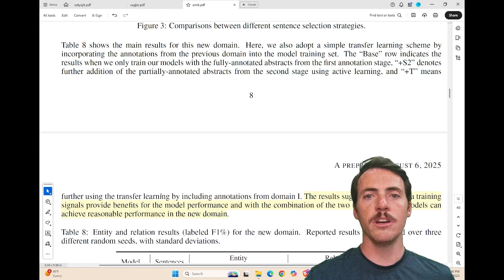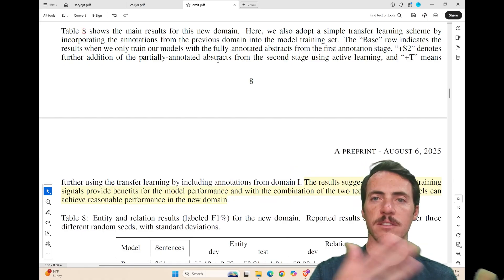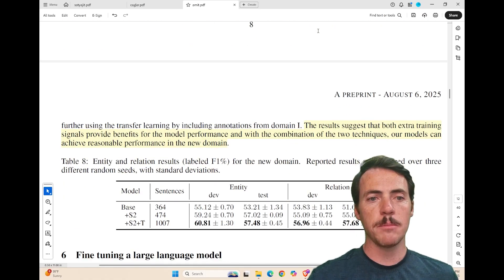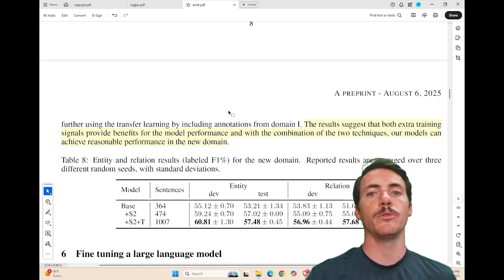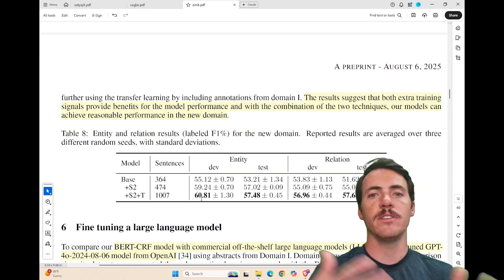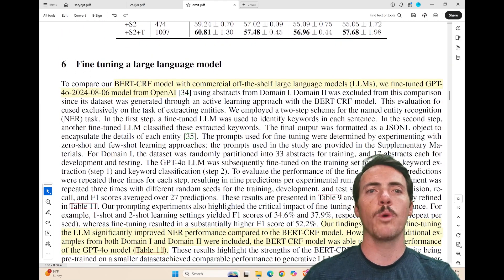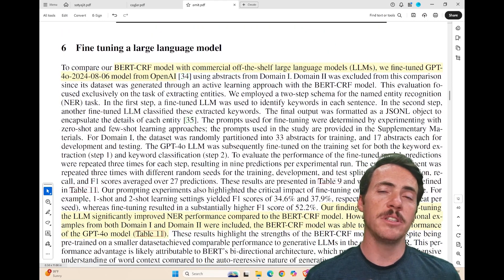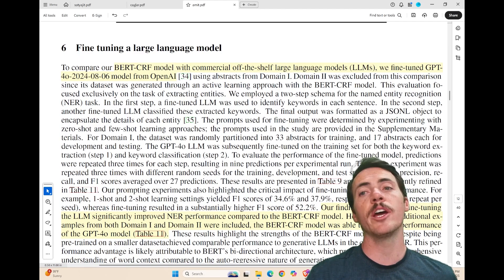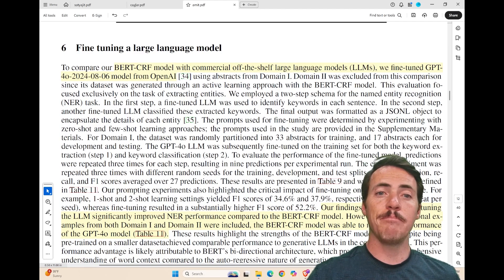The results are shown here in this table where they're showing you the base performance, plus S2, plus T, where that S2 denotes further addition of the partially annotated abstracts from the second stage of active learning. Plus T means that they use transfer learning to include annotations from the domain number one. And basically, you can see this slight improvement from the base as you add these additional annotations.